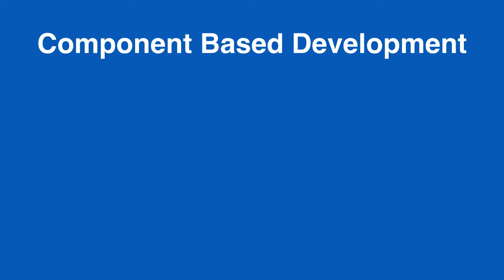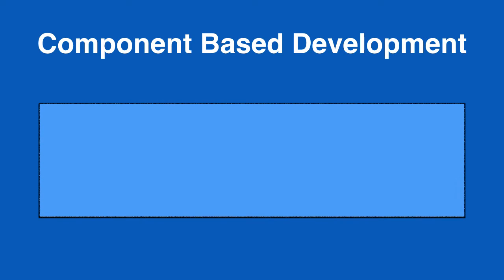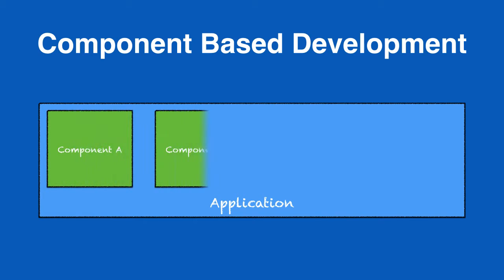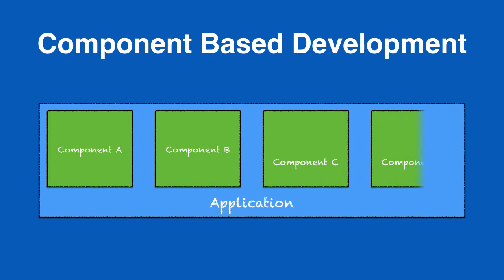So let's first talk about component-based development. In a component-based development system, we have an application, and our application is a container that has many different components in it. We can see here that we've got multiple components: A, B, C, and D.